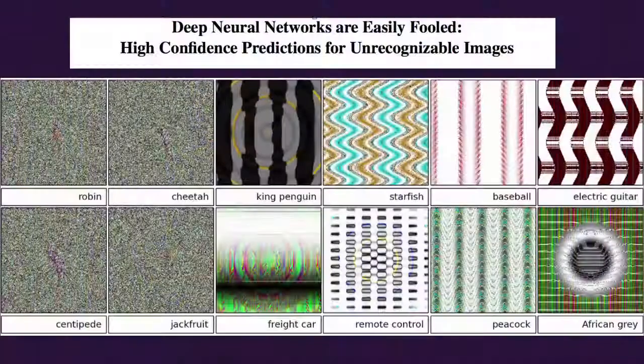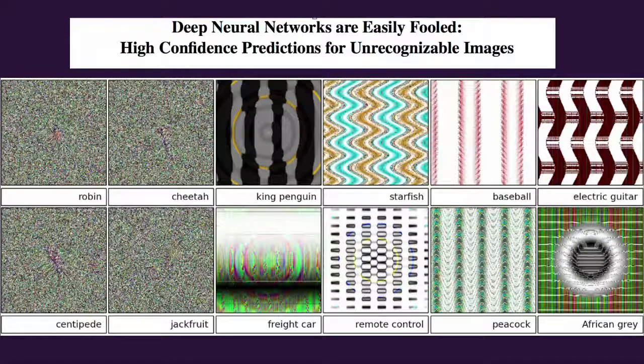And here is a picture from a recent paper on deep neural networks. What it is showing is that these neural networks, which are trained on enormous amount of data, can actually be fooled by making small perturbations. So here you can see pictures of really noise getting recognized as robins or some wavy patterns getting recognized as starfish. These are all recognized with almost 99% certainty that these are really starfish or freight car or jackfruit, etc.